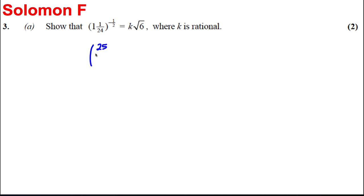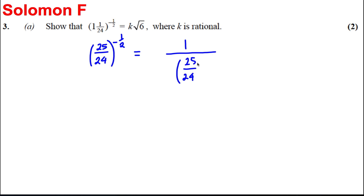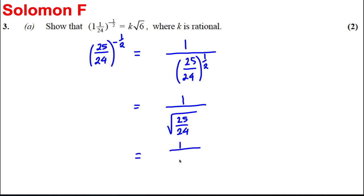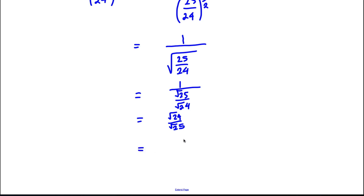This is clearly 25 over 24 as an improper fraction, and that to the negative one half. Now, the negative means 1 over (25/24) to the positive one half. And to the power of one half is the square root, so that's 1 over the square root of 25 over 24, which equals 1 over (root 25 divided by root 24). Since 1 over a fraction equals the inverted fraction, that would be root 24 over root 25, which is the square root of 24 over 5.